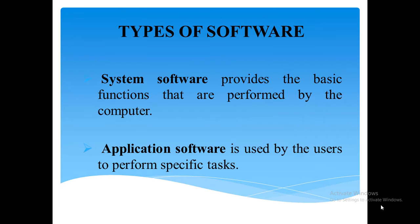We have the first one, which is the system software, and the second one, the application software. The system software provides the basic functions that are performed by the computer, and the application software is used by users to perform specific tasks.